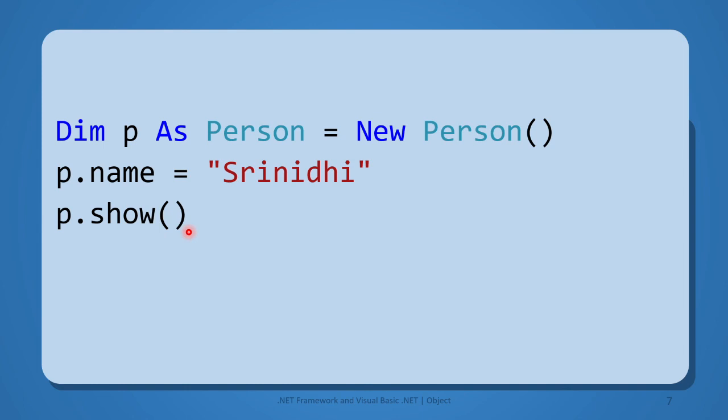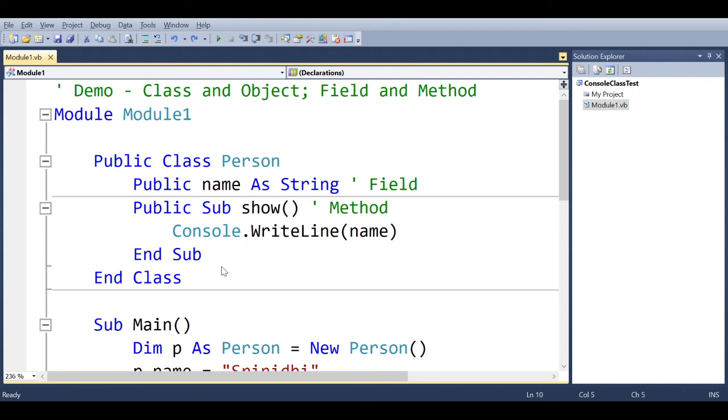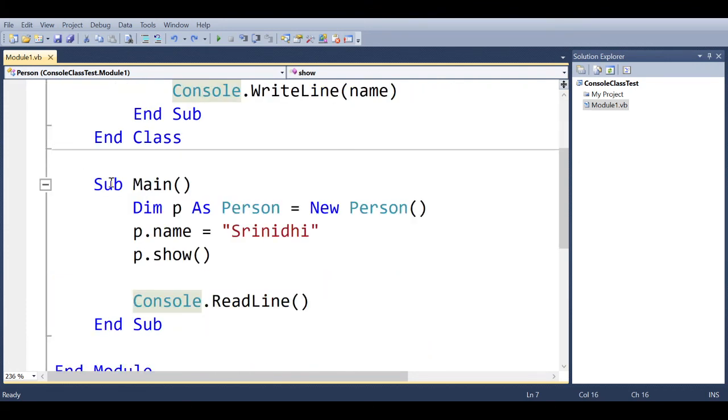Now let us see this in Visual Studio. Here we have our class definition inside module, and we have sub main. And inside sub main, we are going to create and instantiate our object and access its field and method.